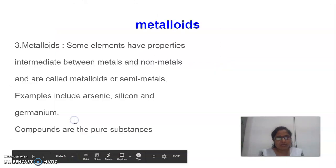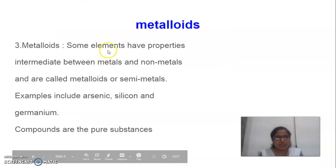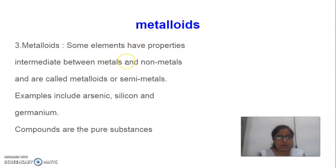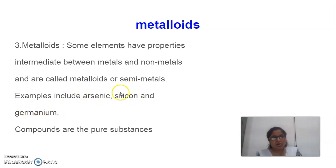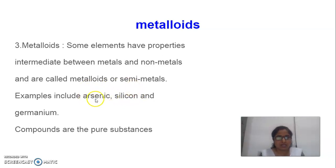Then we will see the metalloids. Metalloids have properties intermediate between metals and non-metals. These are called metalloids or semi-metals. Examples include arsenic, silicon, and germanium. Silicon is a semiconductor and is used in solar cells. Arsenic is also used in some medicines.